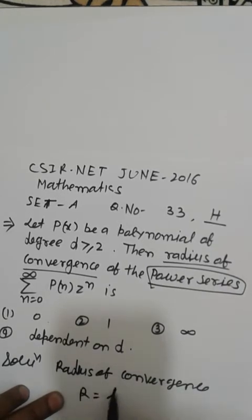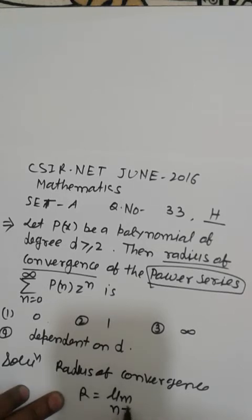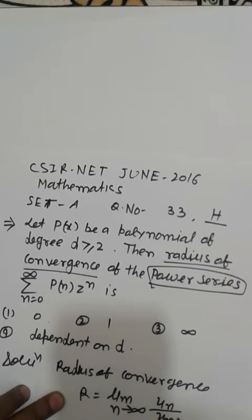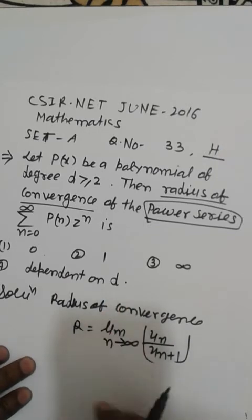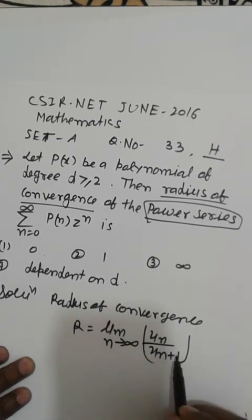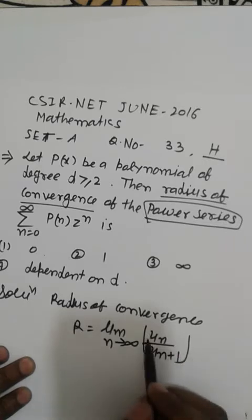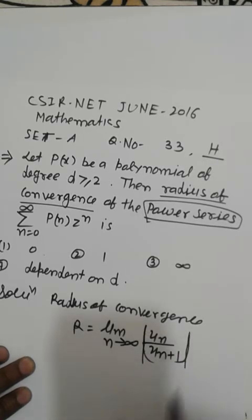We know that the radius of convergence R equals the limit as n tends to infinity of Un divided by Un+1. That is the power series formula. We can also write it as the absolute value or mod format, which means we get the positive value.